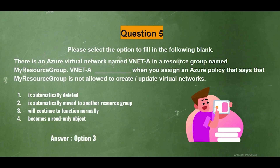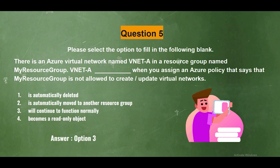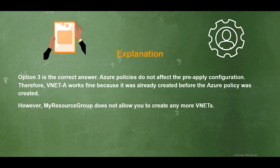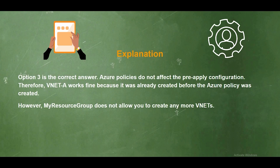Question 5. There is an Azure virtual network named VNETA in a resource group named MyResourceGroup. When you assign an Azure policy that says MyResourceGroup is not allowed to create or update virtual networks, what happens to VNETA? Option 1, it is automatically deleted; Option 2, it is automatically moved to another resource group; Option 3, it will continue to function normally; Option 4, it becomes a read-only object. The answer is option three. Azure policies do not affect pre-existing configurations — VNETA works fine because it was already created before the Azure policy was applied. However, MyResourceGroup will not allow creation of any more VNETs.